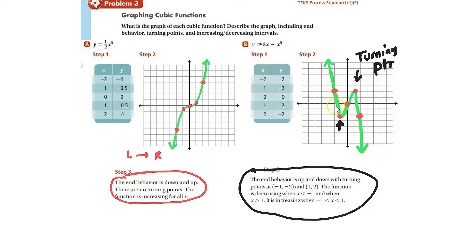In contrast, example b is a reflection over the x-axis because of the negative x cubed term. These points are turning points because the graph goes down, then up, then down. The end behavior is up, then down. When x is less than negative 1, it increases; as x is greater than negative 1, it first increases and then decreases.